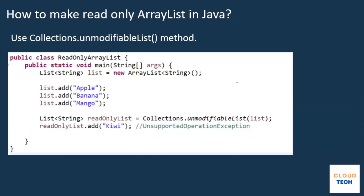The next question is: how to make your ArrayList read only? You have to use the method Collections.unmodifiableList(), to which you pass your actual list. For example, I create a List of String equal to new ArrayList of String, then add apple, banana and mango. Until this point, this is a normal list. Now I want to make this list read only using Collections.unmodifiableList().